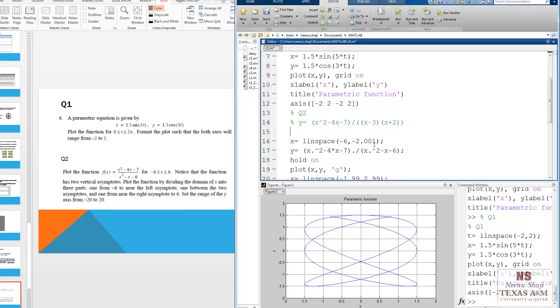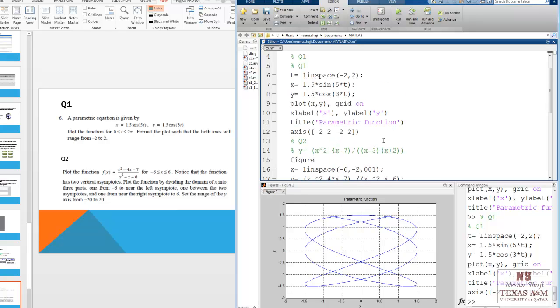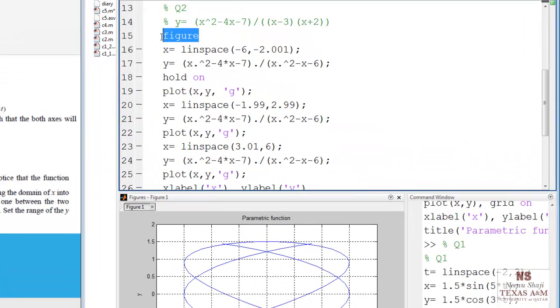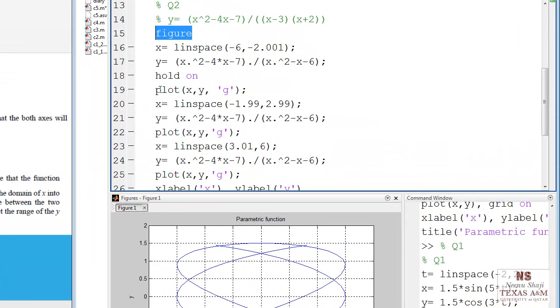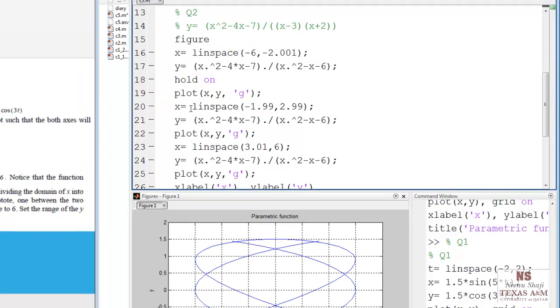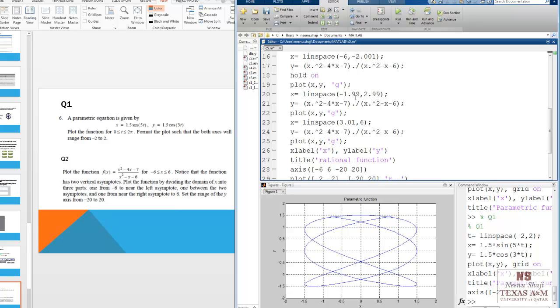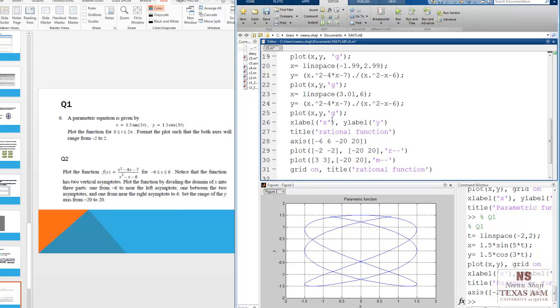Now, we want this on a new window. So let's use the figure command. So figure command should be used before any plot command. x is equal to linspace negative 6 to negative 2.001. Because that was our left asymptote at negative 2. Then evaluate y with the dots. Hold on. Plot x, y, g. So that much part of the graph will be plotted. Then again, define x as negative 1.99 to 2.99. Evaluate y. Then continue till you are complete with the entire rational function.